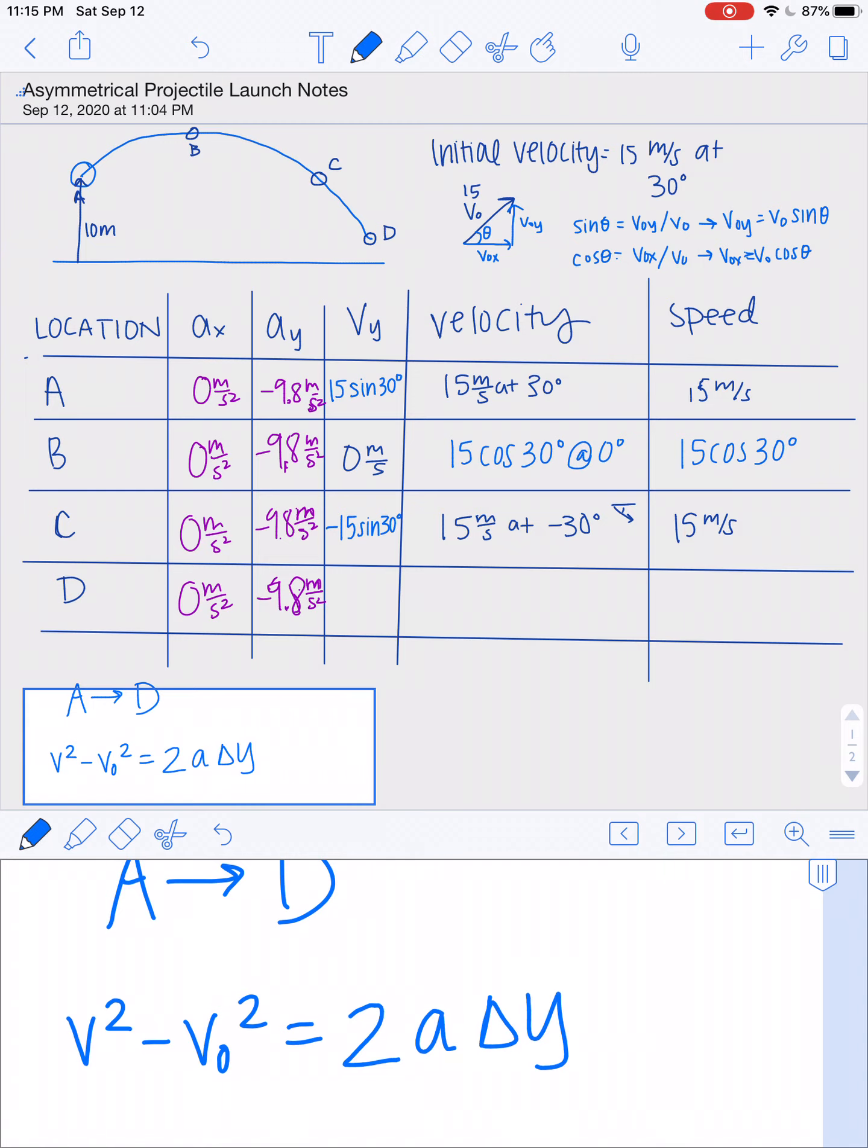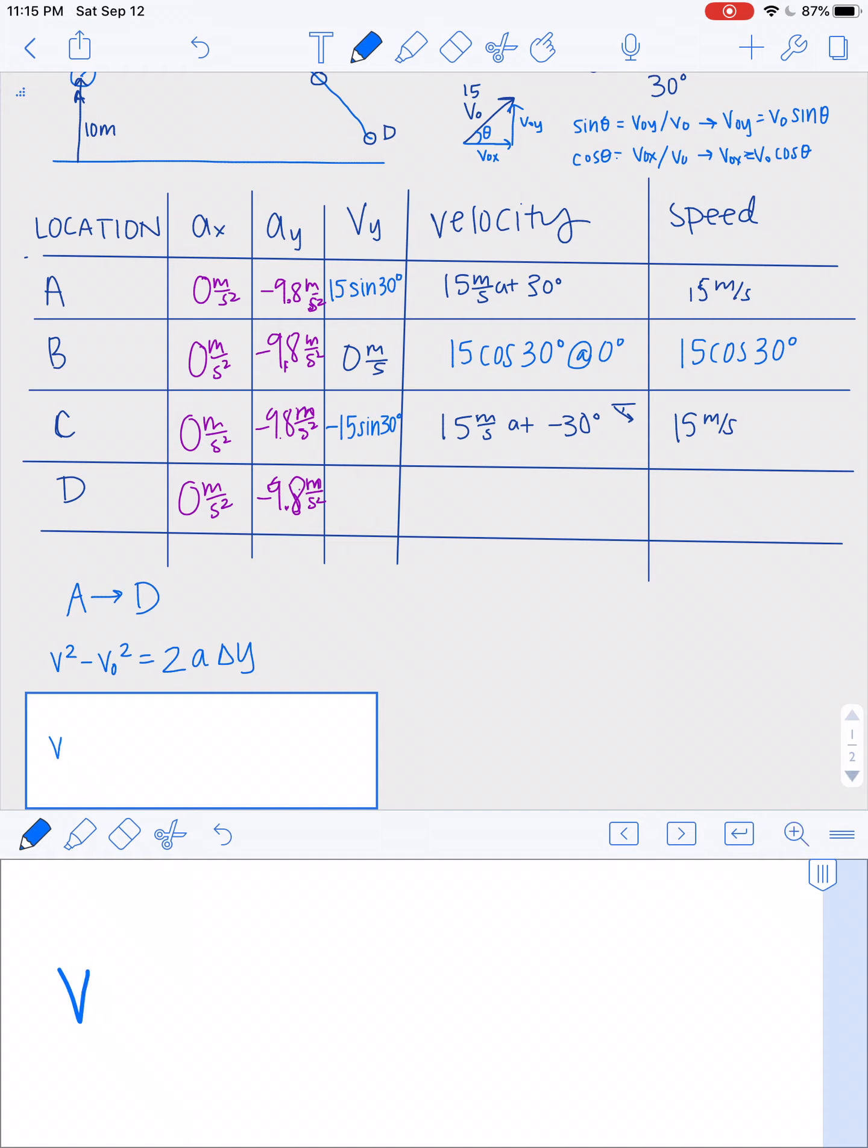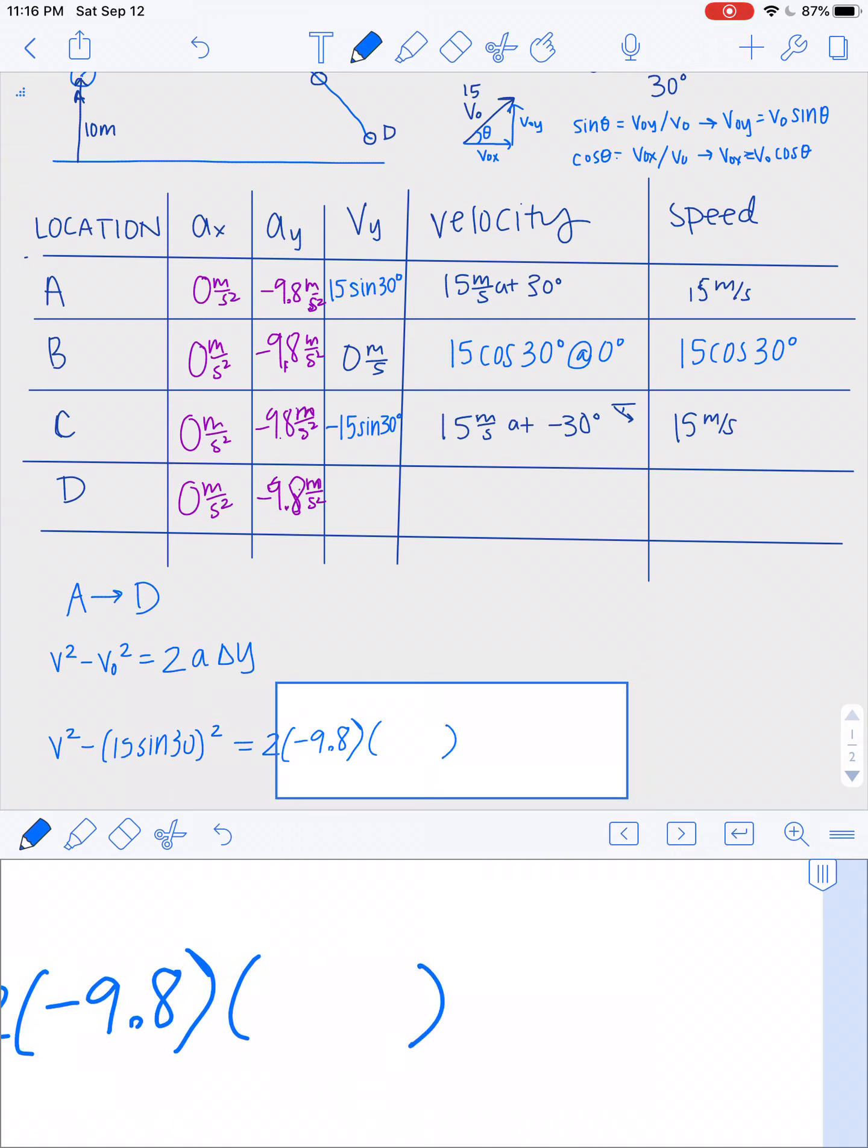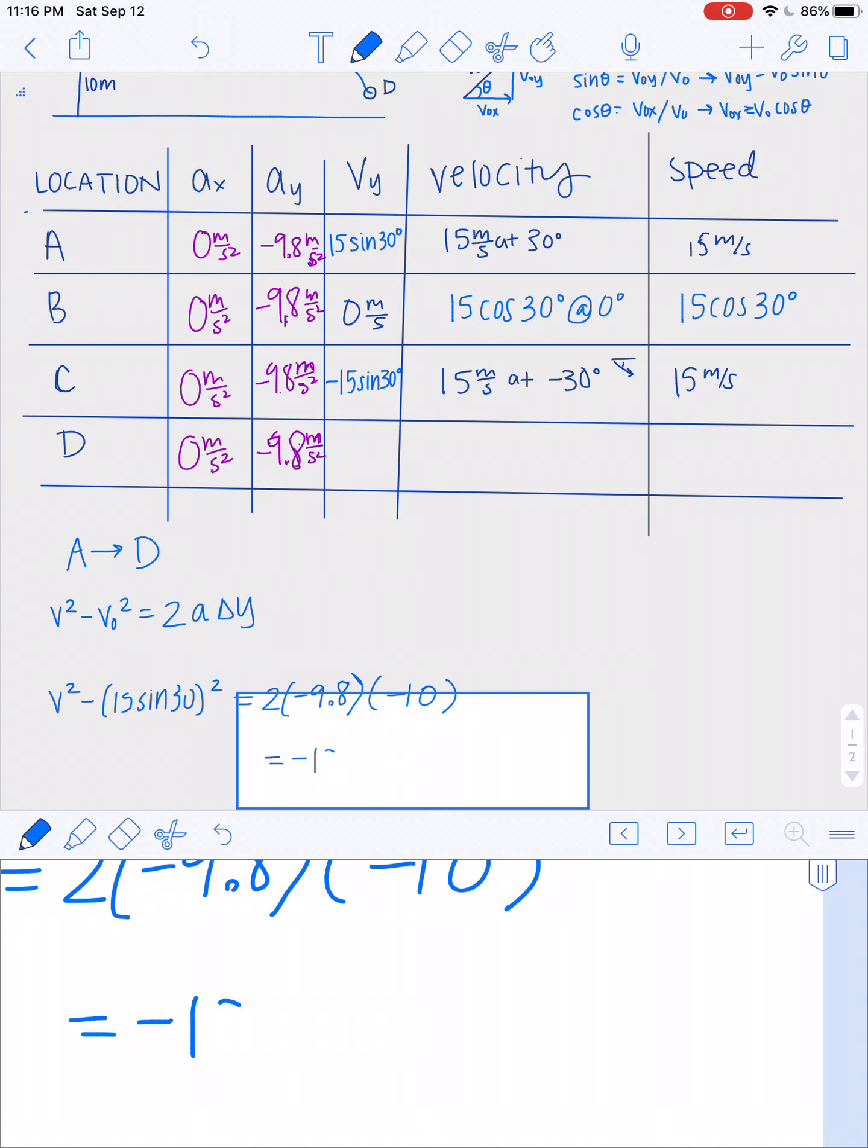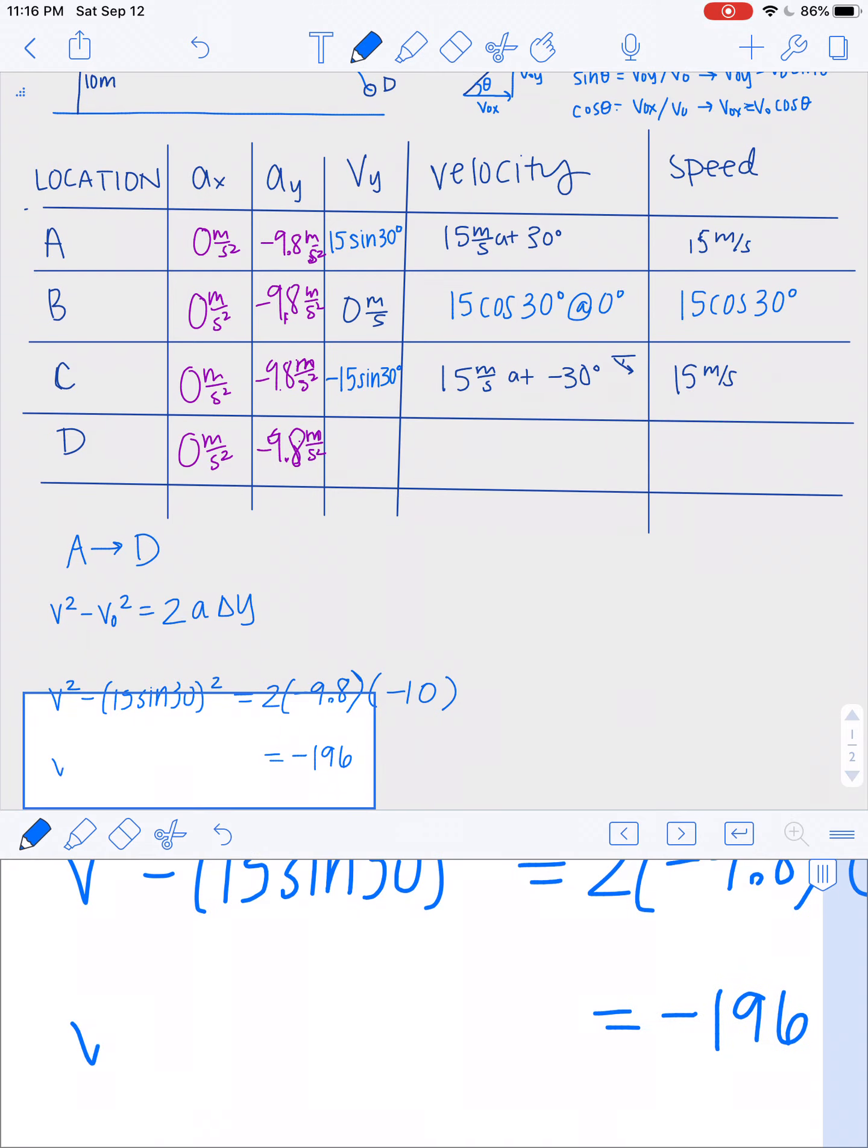So I'm choosing this equation. My initial velocity is going to be that 15 sine 30. My acceleration is still negative 9.8. And is my displacement positive 10 meters or negative 10 meters? Negative 10, because I'm being displaced in that negative direction. So I can simplify all of this. Make sure you keep that negative in there.